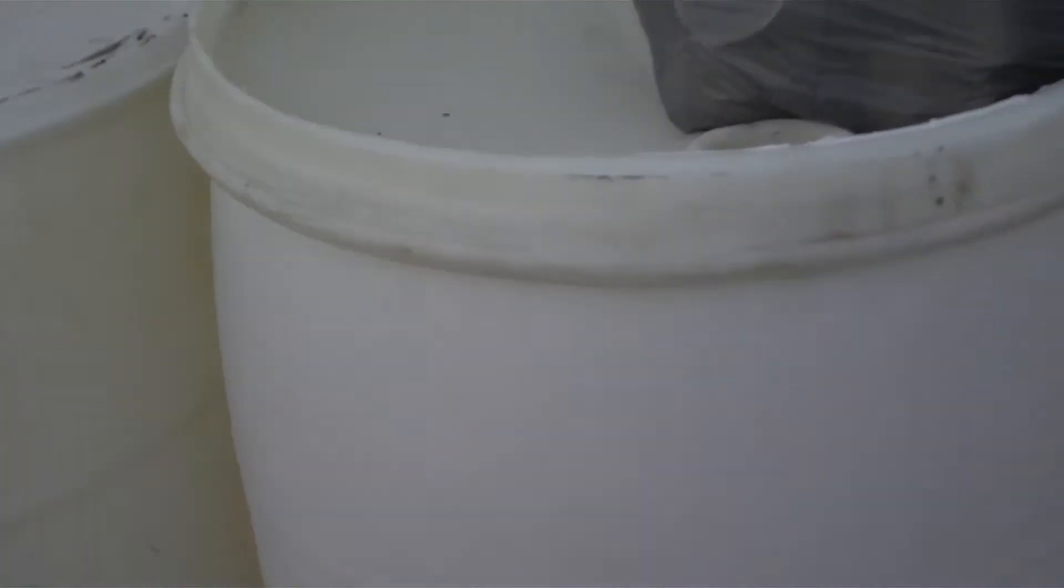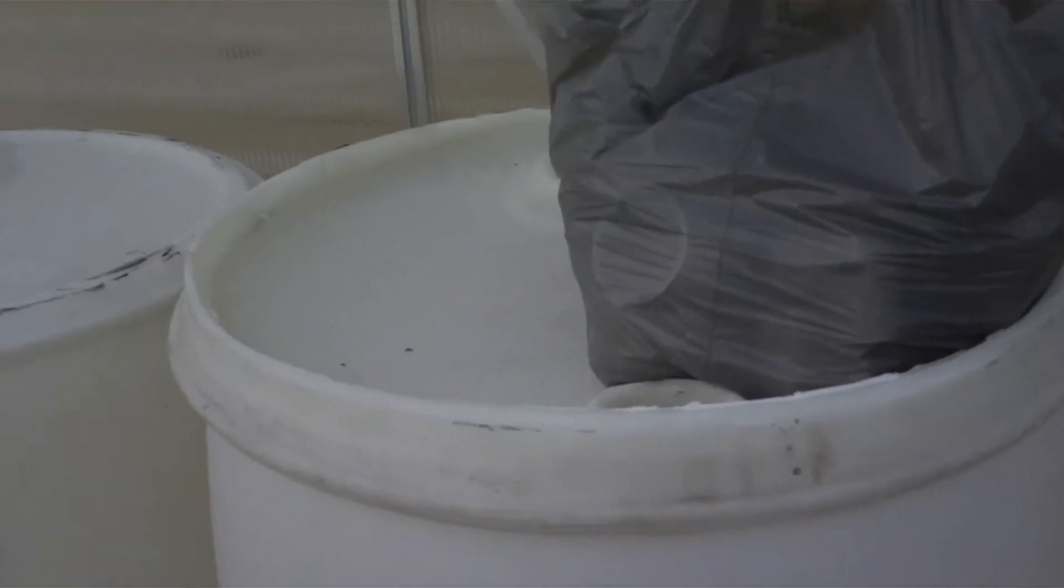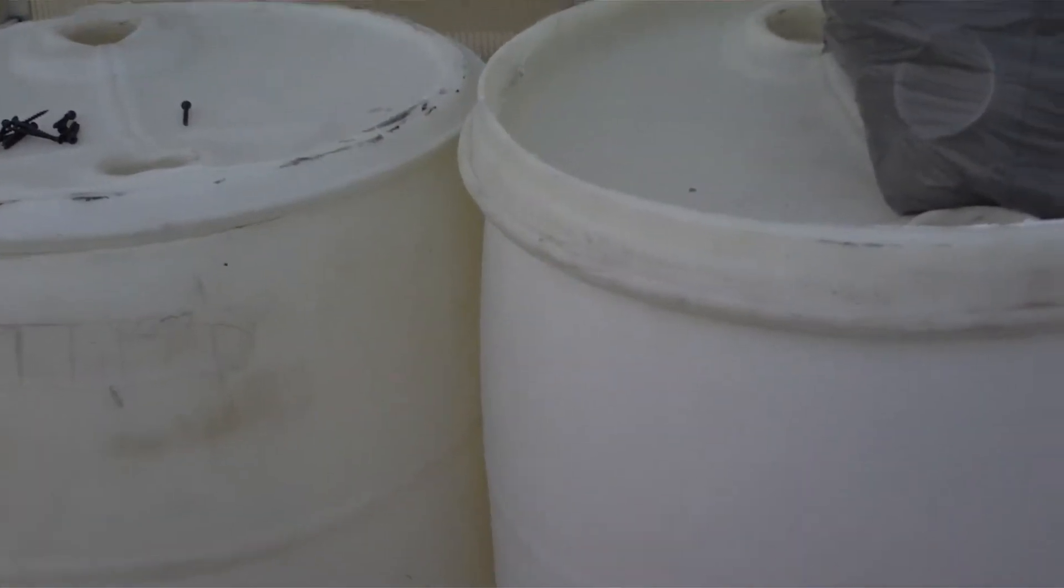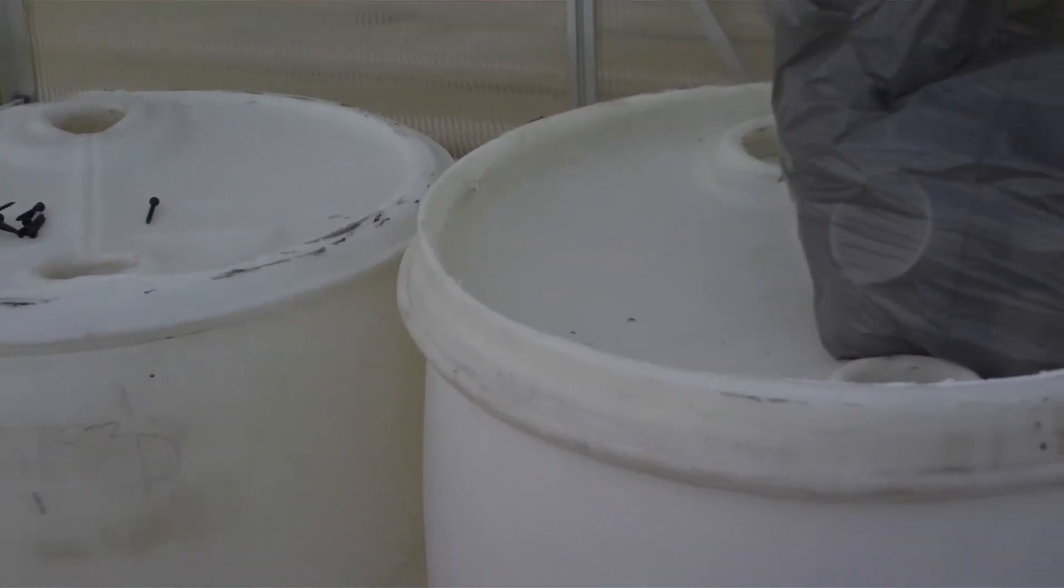What we're going to do is we're going to use some 2-inch tubing that you see there and we're going to join those two barrels together with 2-inch tubing and put a pump inside, a sump pump.